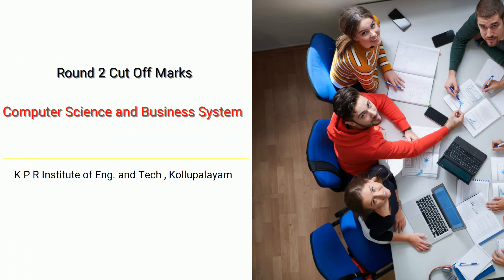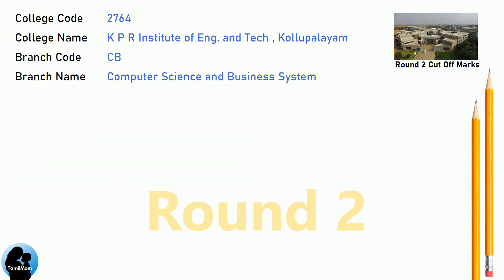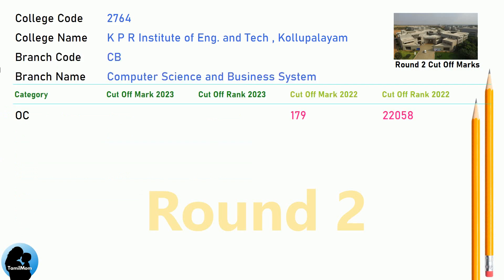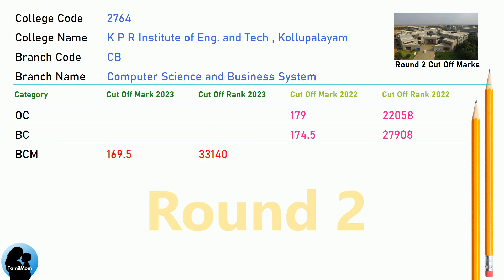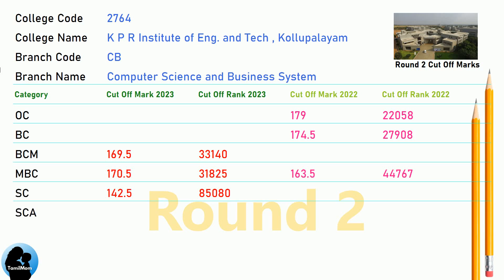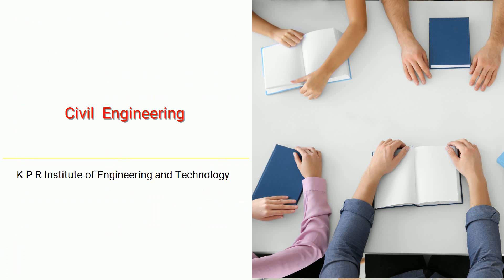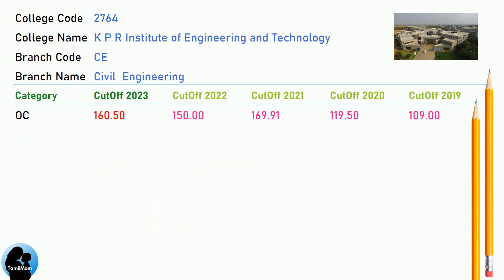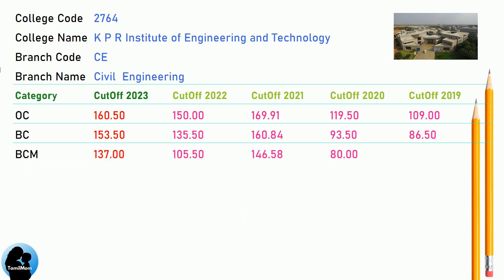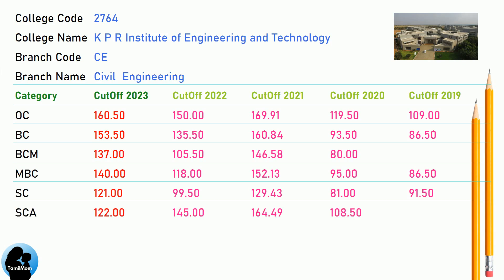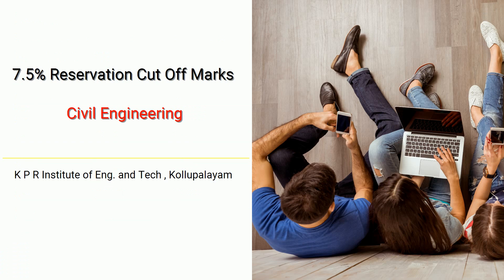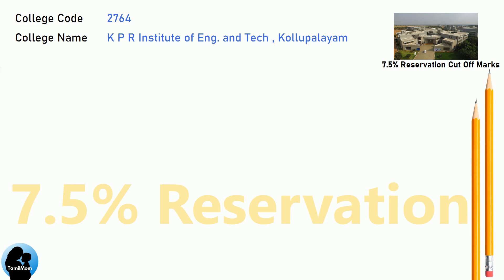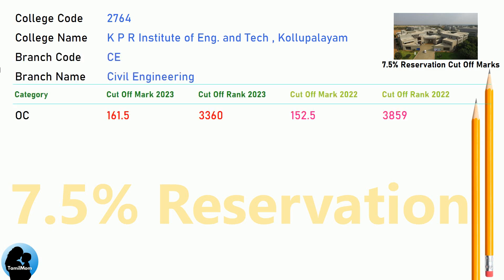BNEA Round 2 Cut-off for KPR Institute of Engineering and Technology in Computer Science and Business Systems. BNEA Round 2 Cut-off for KPR Institute of Engineering and Technology in Civil Engineering. BNEA 7.5 Reservation Cut-off for KPR Institute of Engineering and Technology in Civil Engineering.